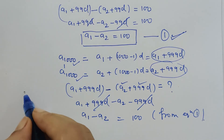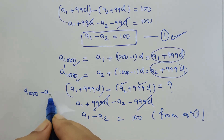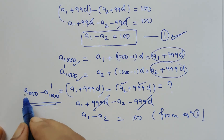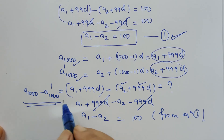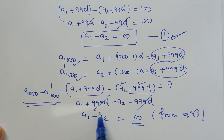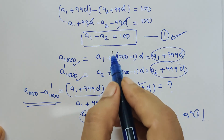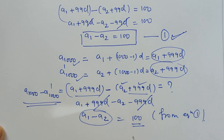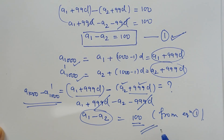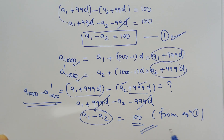So the difference between the thousandth terms of the two APs is also 100. We used the fact that a1 minus a2 equals 100, derived from the difference of the hundredth terms. I hope this solution is clear to everyone. Thank you and have fun!